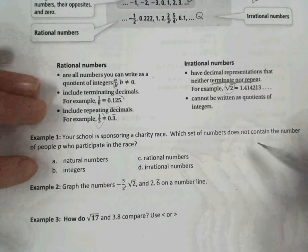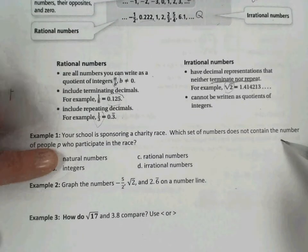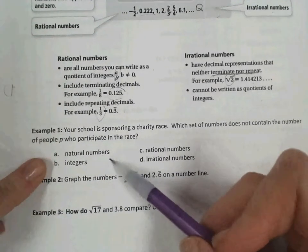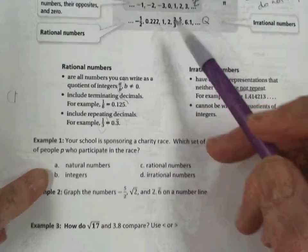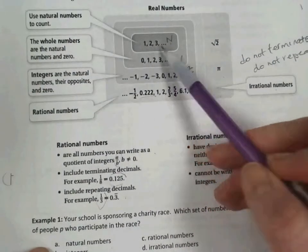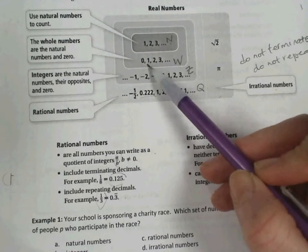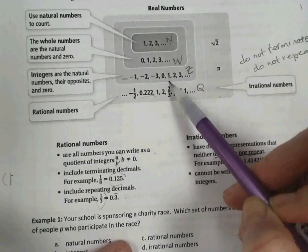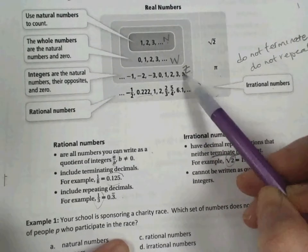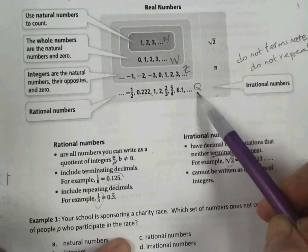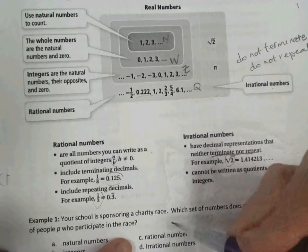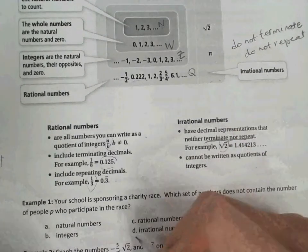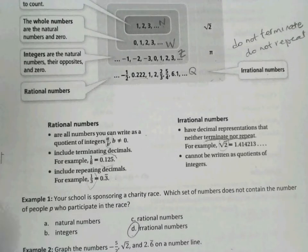So for example, your school is sponsoring a charity race. Which set of numbers does not contain the number of people, P, who participate in the race? And the number of people that participate in the race could be a natural number because that includes, we obviously would need a positive number or 0. So integers include those options. Rational numbers. So again, since integers and whole numbers are included within rational numbers, then of course we could find those values in rational numbers, the set of rational numbers. But not in the set of irrational numbers.